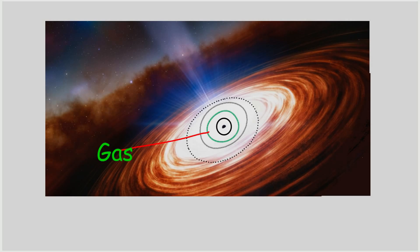This disk is made of infalling gas, dust, and even stars, all heated to tens of millions of degrees as they spiral toward the black hole.